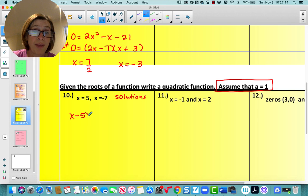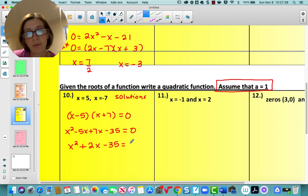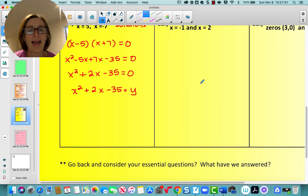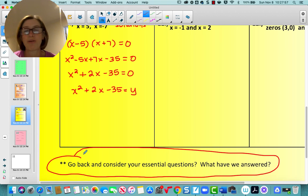Then we multiply. So x squared minus 5x plus 7x minus 35 equals 0. And then x squared plus 2x minus 35 equals 0. And then x squared plus 2x minus 35 equals y. It says write it as a quadratic function so I could set it equal to y or f of x. All right, I want you to try number 11 and number 12 and we're going to talk about how we have answered some of our essential questions. All right, have a great day.